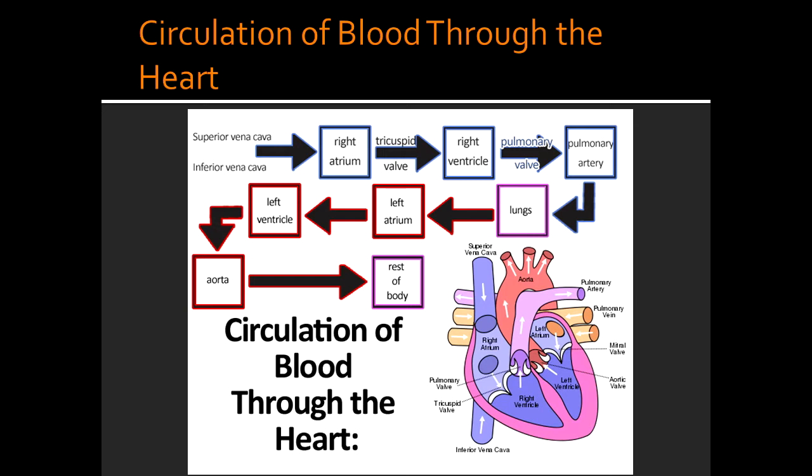From the right atrium, it goes through the tricuspid valve to the right ventricle. From the right ventricle, it goes through the pulmonary valve, then through the pulmonary artery, and makes its way to the lungs.